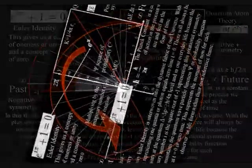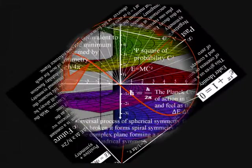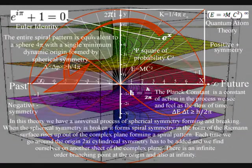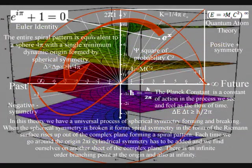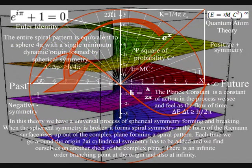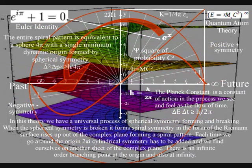To understand this further, we have to use the next diagram that shows how this spherical symmetry breaks, forming spiral symmetry that has line symmetry for the arrow of time. When the spherical symmetry is broken, it forms spiral symmetry in the form of the Riemann surface rising up out of the complex plane, forming a spiral pattern. Euler's identity is at the heart of this process.